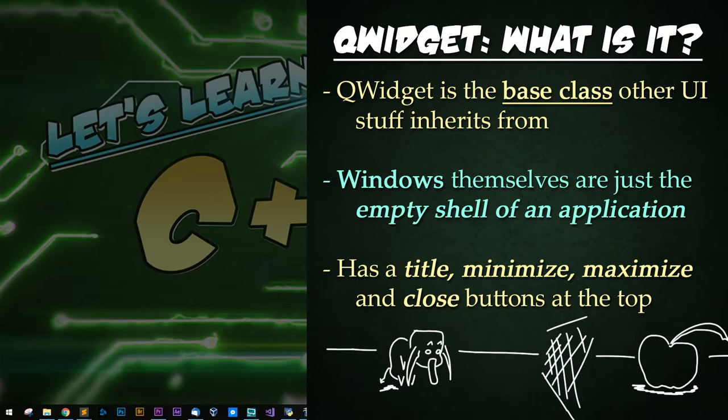QWidget is the simplest of all window types and the base class other UI stuff inherits from. QWidget is the first of the four window classes I'll be showing. Windows themselves are just the empty shell of an application, tool, or whatever you're making. Most everything your user interacts with will be contained or launched from this generated user interface, or GUI, or UI, or whatever you want to call it.